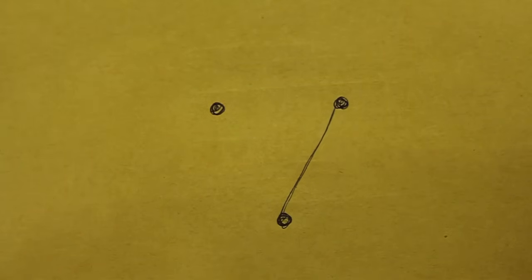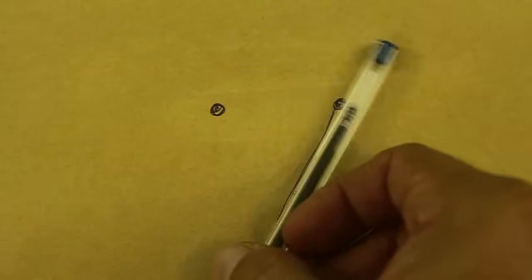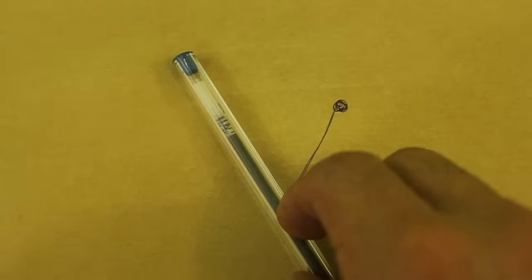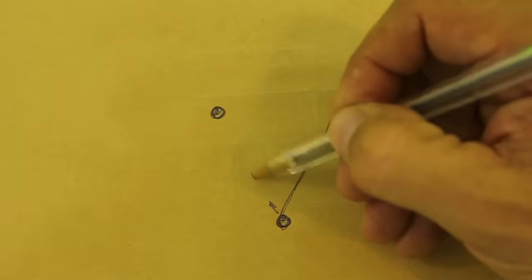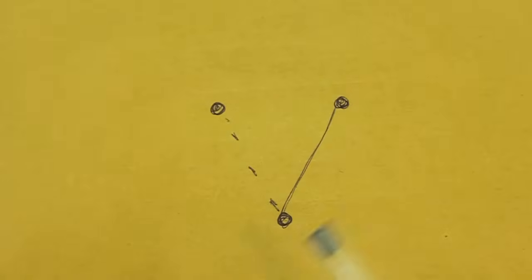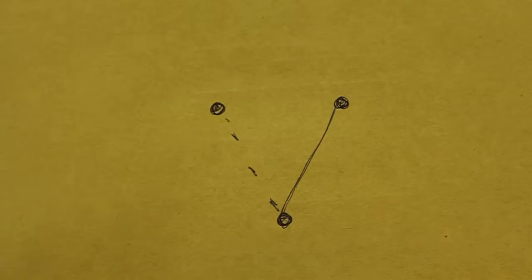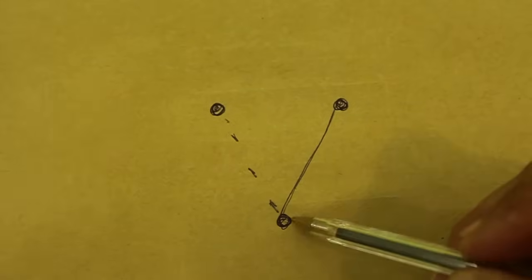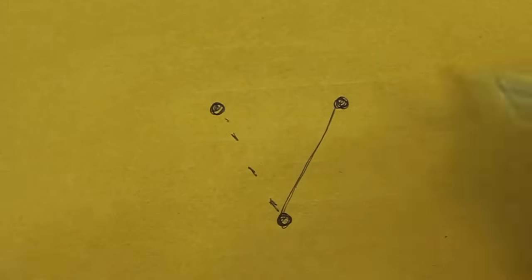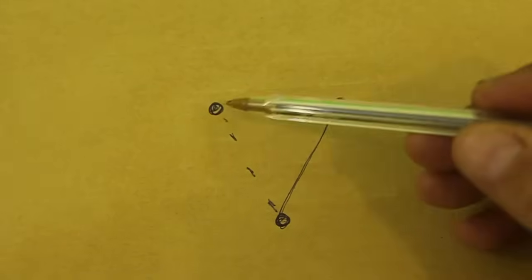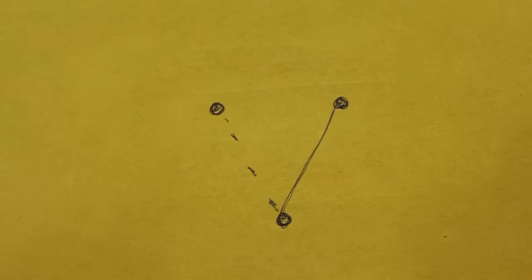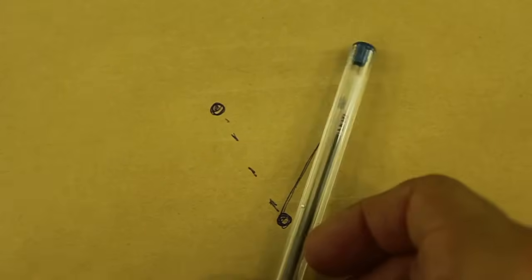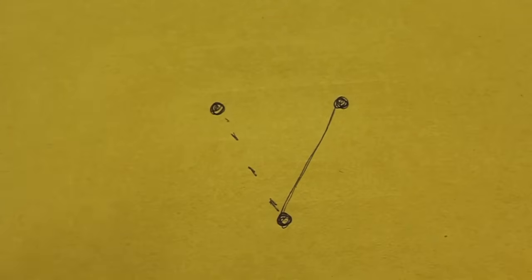When we energize the coil, this moves to the other position and now we have a connection here and not here. So when we check with the multimeter, we will see continuity between these two and not between these two. And when we energize the coil, the situation changes to the other way.